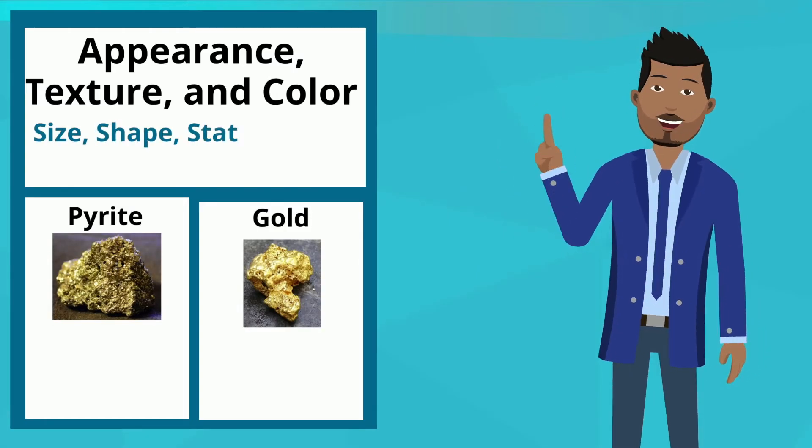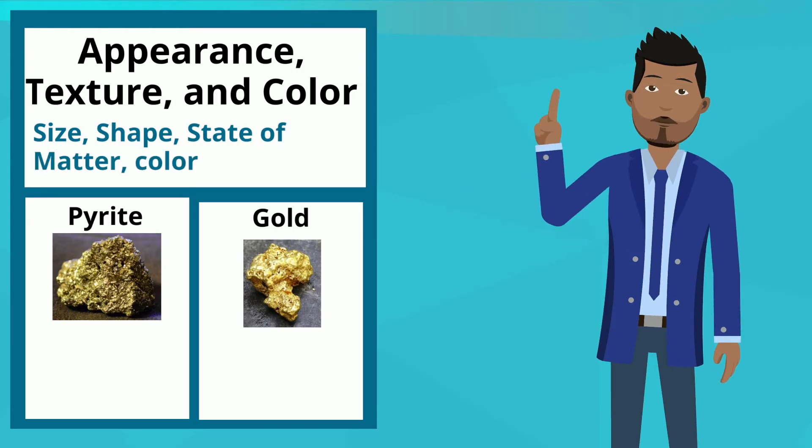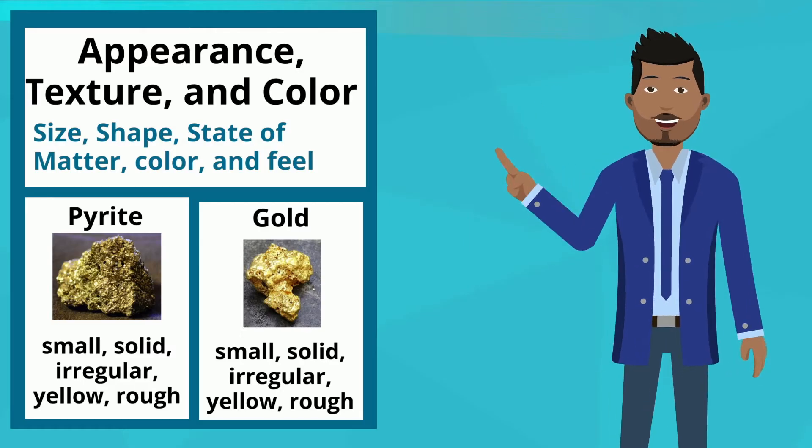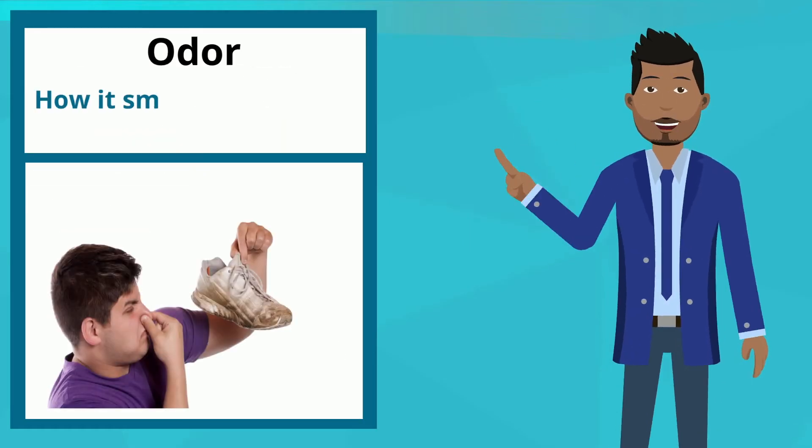Appearance, texture, and color is the size, shape, state of matter, color, and feel. Odor is how it smells.